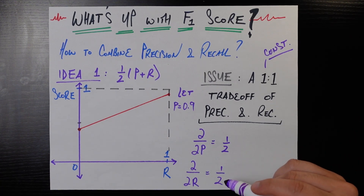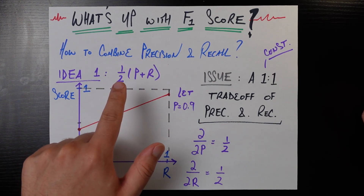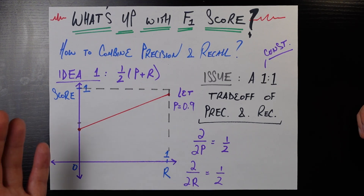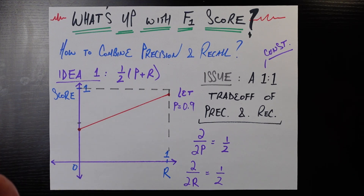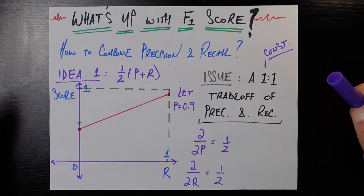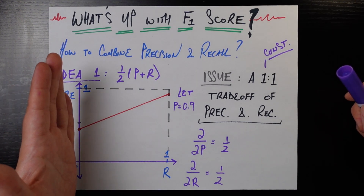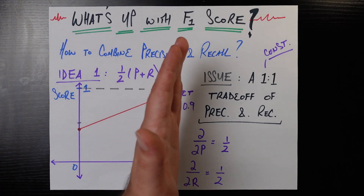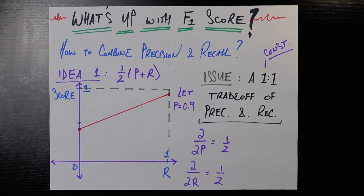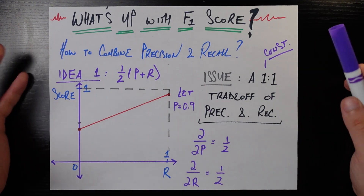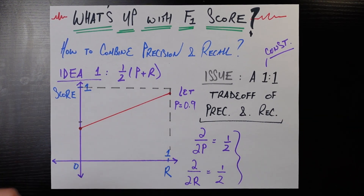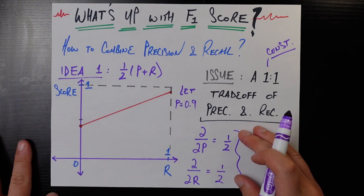The change in this function with respect to a small change in precision or recall is just the constant one-half. It doesn't care about where on the precision or recall curve you are. If your recall is currently zero, a little bit of an increase is actually a really big deal — going from 0 to 0.1 recall is huge and your metric should reflect that. Versus if you have a 0.9 recall and increase to 1, that's good but not as big a deal. Because this is a linear function, it doesn't care where your precision or recall are, which is captured by these derivatives being just constants. So while it's a good first attempt, it does have a bunch of issues.